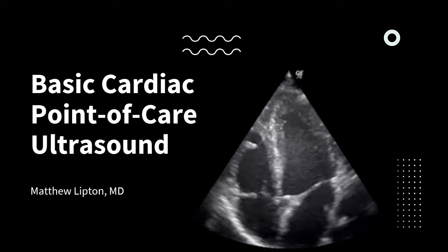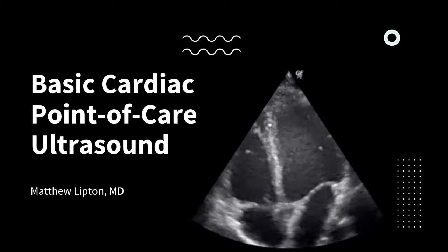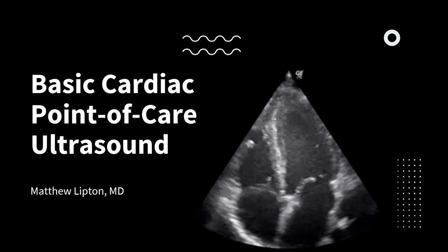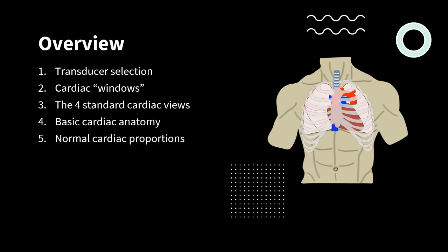This is an introductory lecture to ensure everyone understands the basics of point-of-care echocardiography. The overview for this lecture will hit on the five important points of point-of-care echo, including transducer selection, cardiac windows, basic cardiac views, cardiac anatomy, and cardiac proportions.